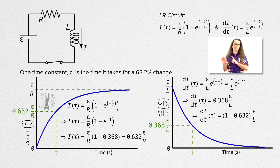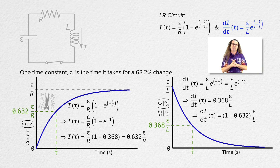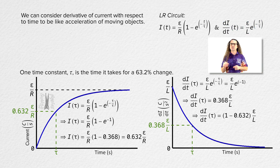However, Bo still has a question. What is that question? What does it even mean that we have an equation for the derivative of current as a function of time? What does an equation for the time rate of change of current as a function of time mean? That is a fair question. You can consider the derivative of current with respect to time to be the electrical equivalent of acceleration for objects in motion.